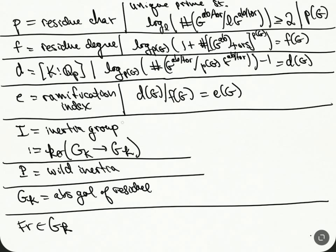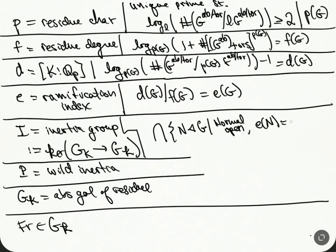The inertia group is a little more interesting. It is defined as the intersection over normal, open subgroups N of G satisfying the condition that E(N) equals E(G) — meaning the extension is totally ramified. Open subgroups correspond to field extensions, so all this machinery applies. We define this group to be I(G), the group-theoretic interpretation of the inertia group.